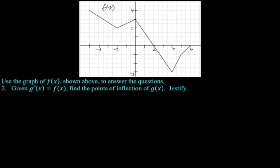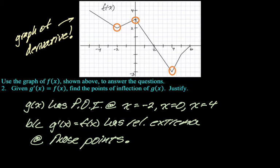Given that g prime is f of x, find the points of inflection of g of x and justify it. Alright, so g prime is f of x, which means this is the graph of the derivative. If we're looking at the graph of the derivative, we can find the points of inflection of the original by looking for the relative extrema. So here, here, and here, and then we'll just write down our answer. So we're gonna say points of inflection at negative two, zero, and four, and then my reasoning is gonna be because g prime equals f of x. I like to do that because I don't know if the person reading it will know, like I don't want to write just f of x has relative extrema. I want to say like connect it to g prime because I'm talking about g. So g prime equals f of x has relative extrema at those points. I think that's good enough.